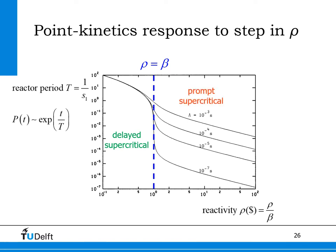For values of reactivity larger than one dollar, the reactor becomes supercritical on prompt neutrons alone and the reactor power will increase very rapidly. The reactor period now depends strongly on the neutron generation time, and for small generation times the reactor period becomes extremely small. This means the reactor will be very difficult to control, and in some cases automatic feedback effects like the nuclear Doppler effect might not be able to compensate for the inserted reactivity.